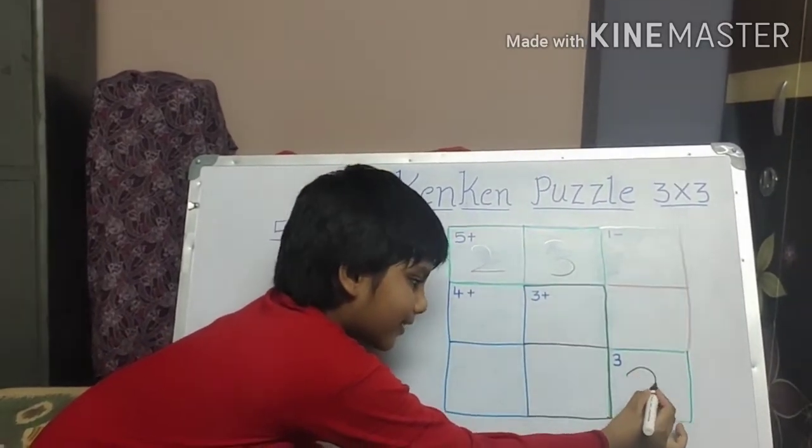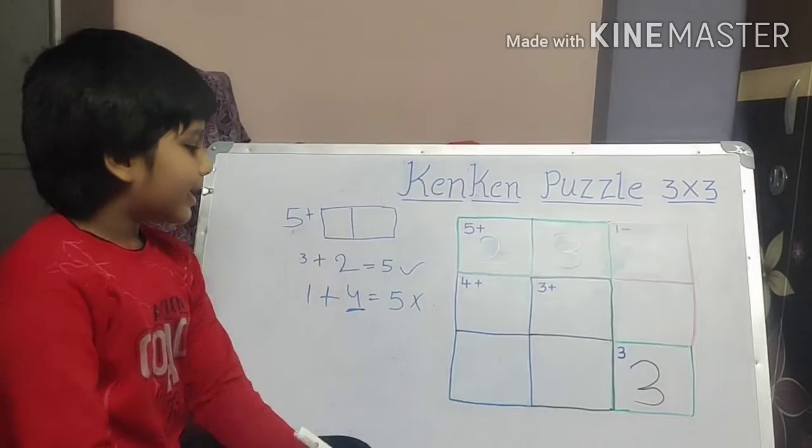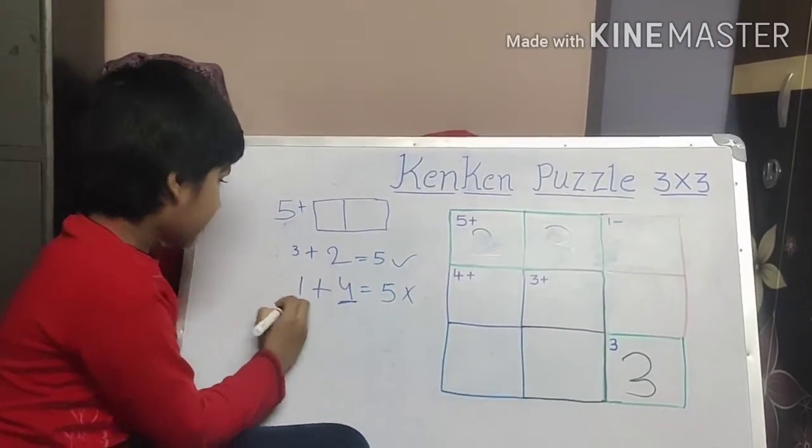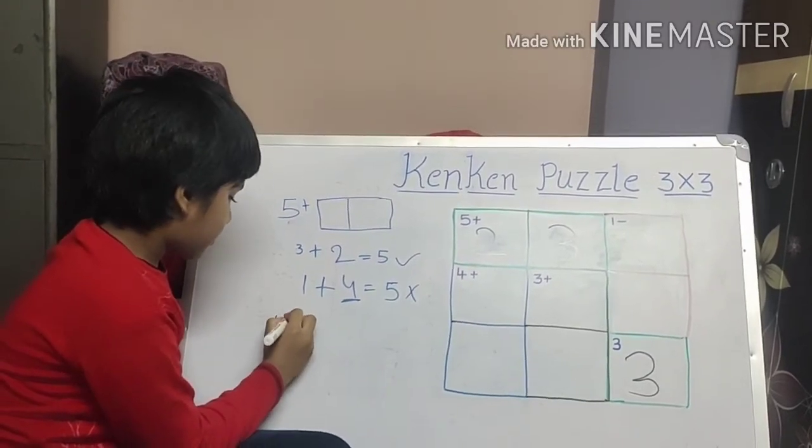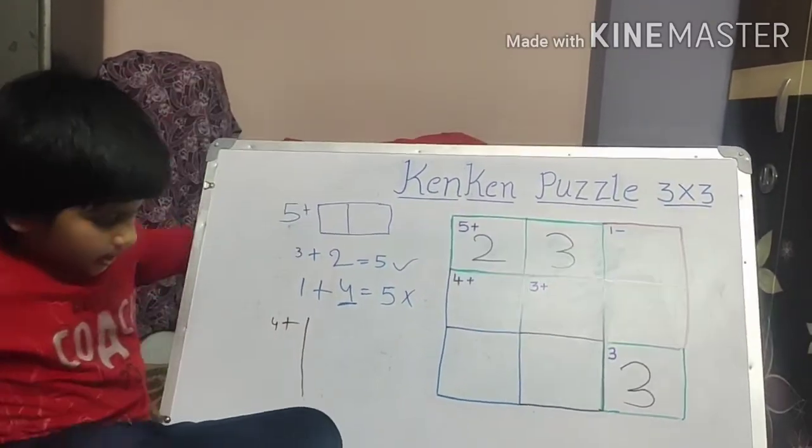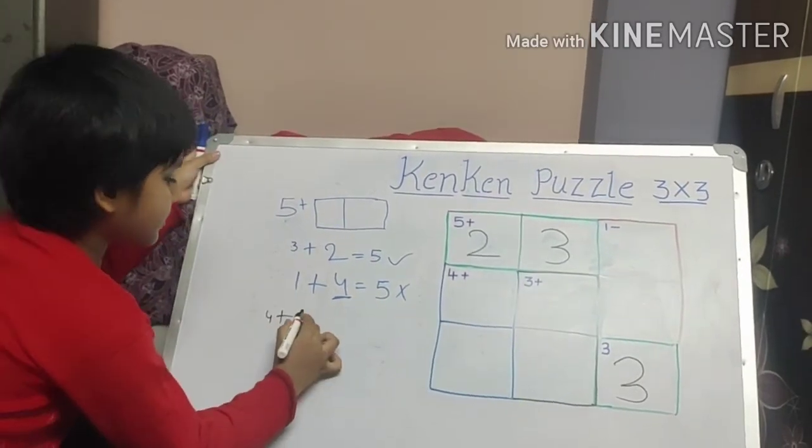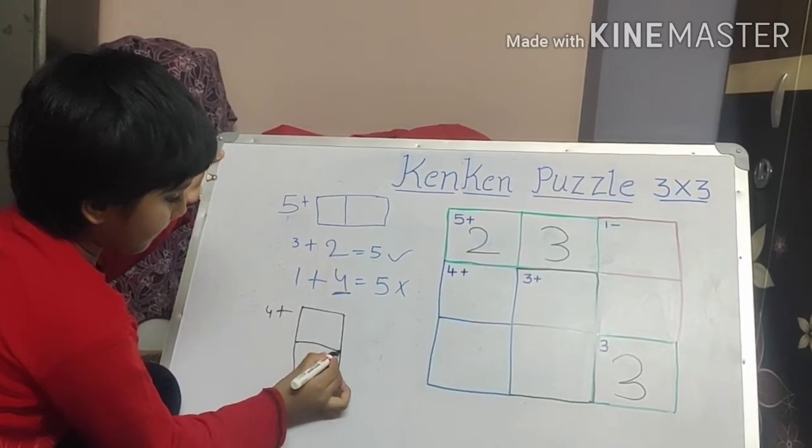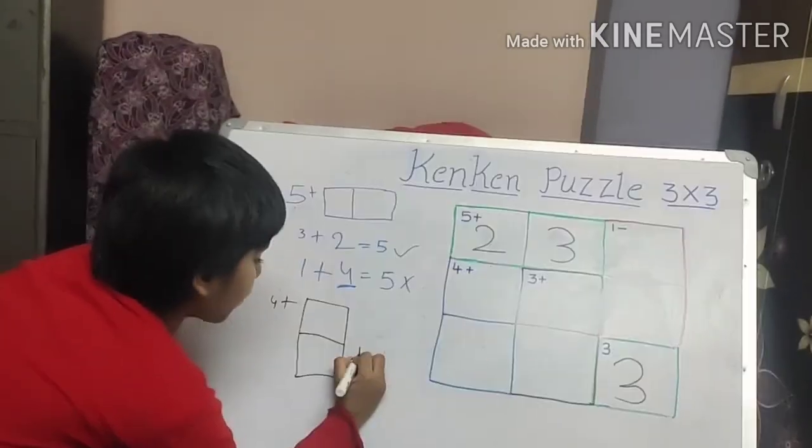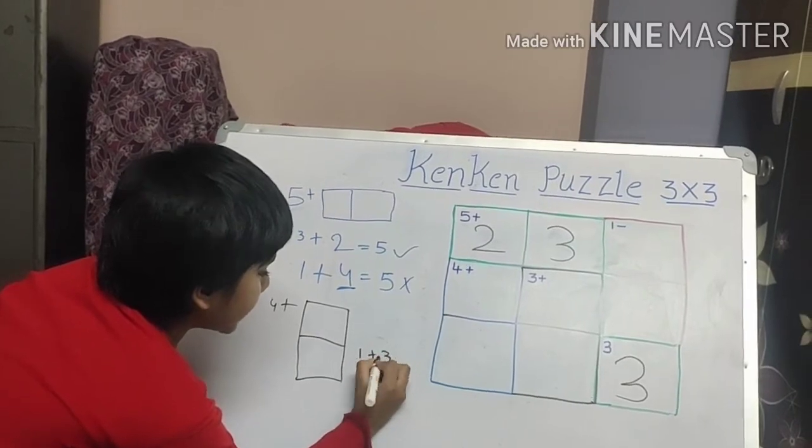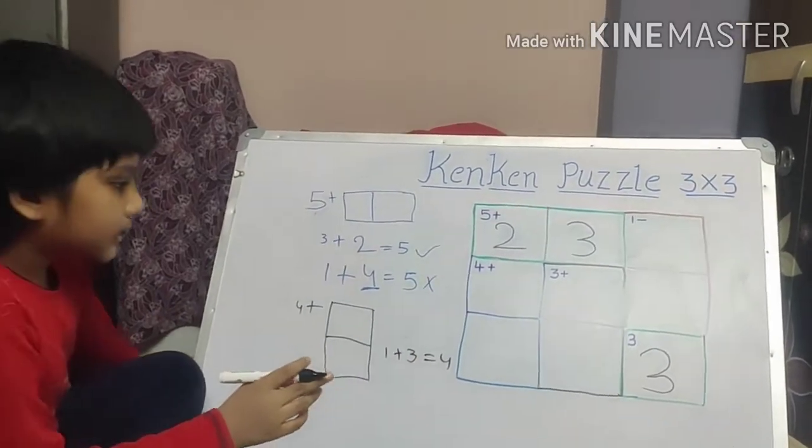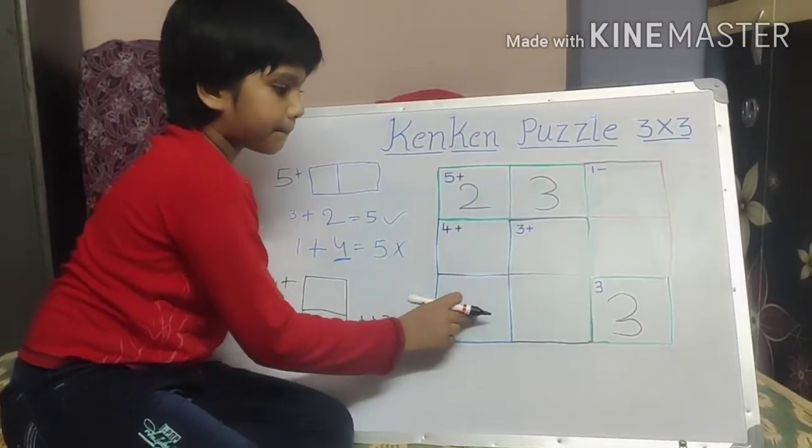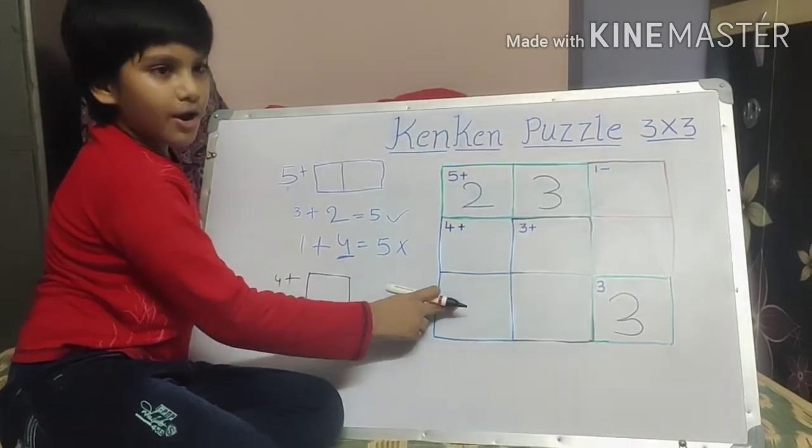Next we take the four plus. We will write four plus. They have given like this, two boxes. One plus three is equal to four. So we have to, in this column, there is three. Because we have to, since we have three in this column...